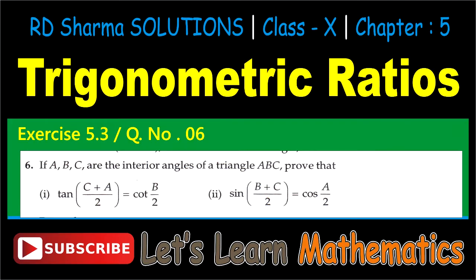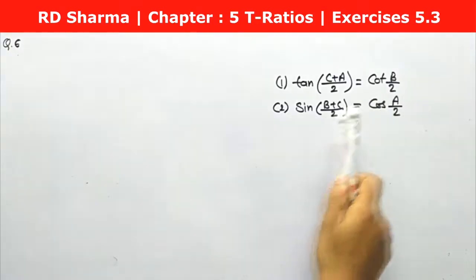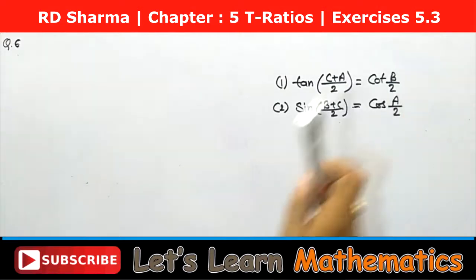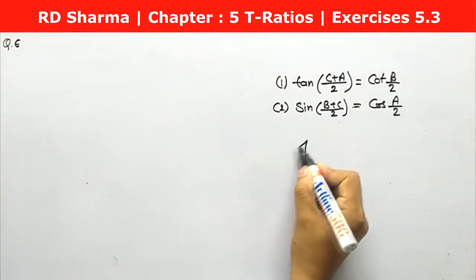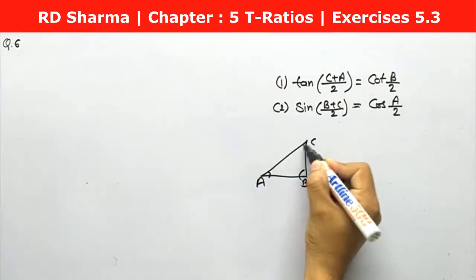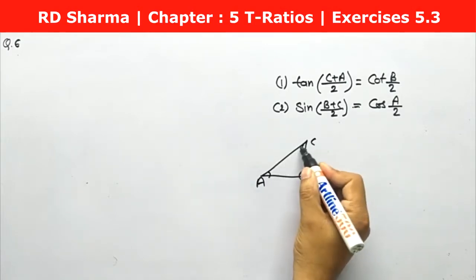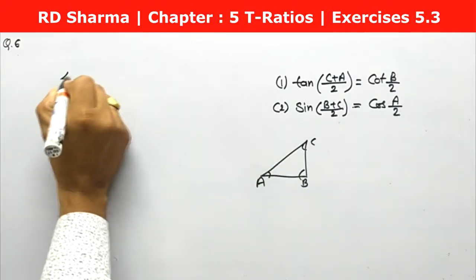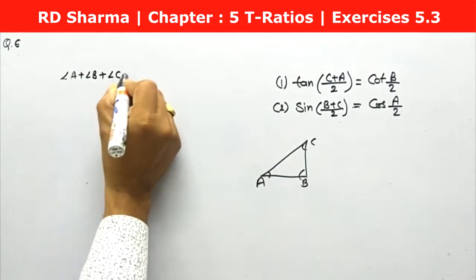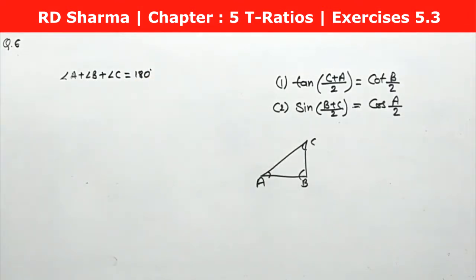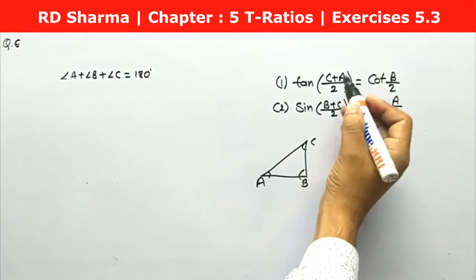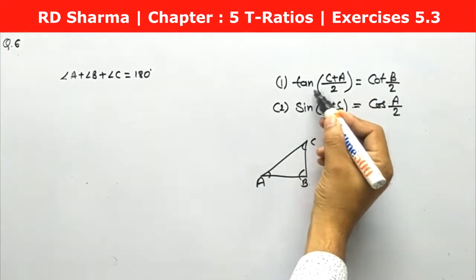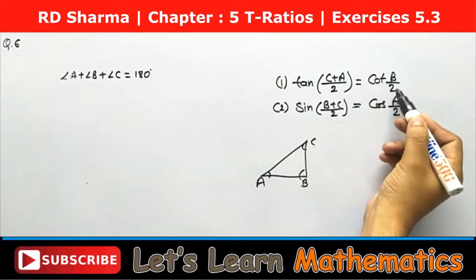It's easy to prove. Since A, B, C are interior angles of a triangle, we know the angle sum property: angle A plus angle B plus angle C equals 180 degrees. For the first problem, we leave A and C on one side and transfer B to the right: A plus C equals 180 minus B. Dividing both sides by 2 gives (A plus C) by 2 equals 90 minus B by 2.